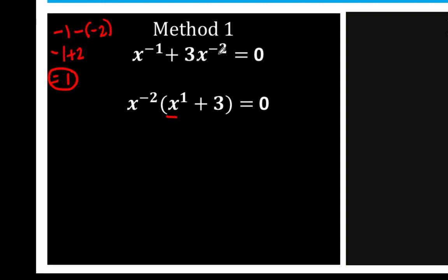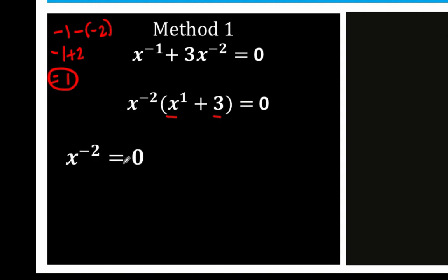Then 3x raised to negative 2 divided by x raised to negative 2: when you divide x raised to negative 2 by itself, that equals 1, and so 3 times 1 equals 3. We copy the right side. Now, since the product of these two factors equals 0, that means one of them must be 0: either x raised to negative 2 equals 0, or the other factor x plus 3 equals 0.